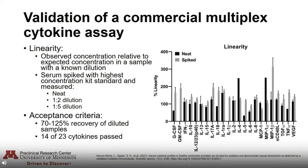Next we looked at linearity — defined as the observed concentration relative to expected concentration in a sample with a known dilution. We spiked serum with the highest concentration kit standard and measured it neat and also diluted at 1:2 and 1:5 dilutions. Our acceptance criteria was 70 to 125 percent recovery of our diluted samples, and with this criteria 14 of the 23 cytokines passed.